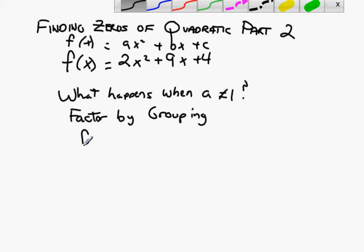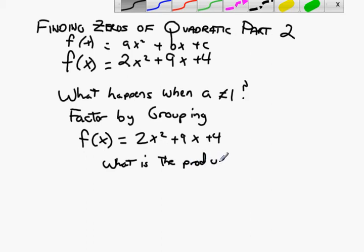So here we go. We have our function f of x equals 2x-squared plus 9x plus 4. So here's how this differs from the first process we just learned. We are going to ask another question. What is the product of AC?